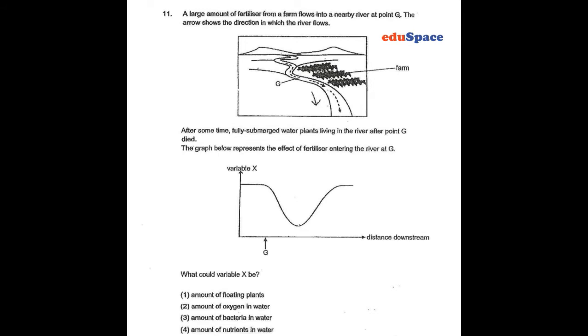In this case, what could be variable X that has dropped greatly when fertilizer enters the river? Since the fully submerged water plants die after point G, this variable dropping greatly must cause the fully submerged water plants to die.